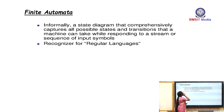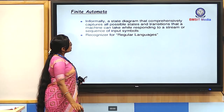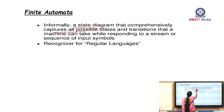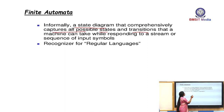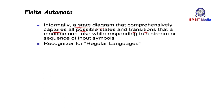Now let's understand what finite automata is. A finite automata is defined as a state diagram that can capture all possible states and transitions that a machine can take while responding to a stream or sequence of input symbols. Let's understand this definition with an example.